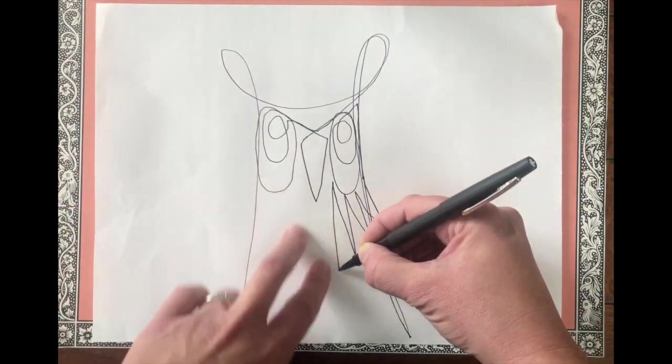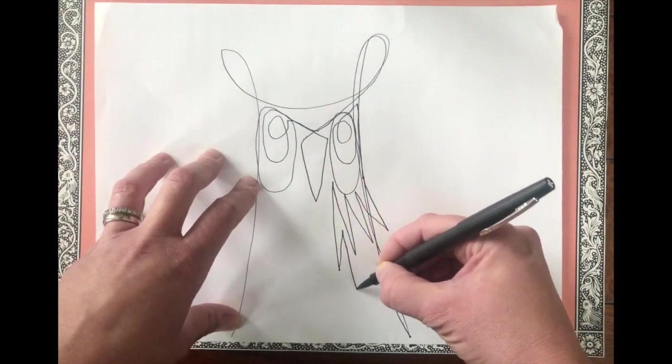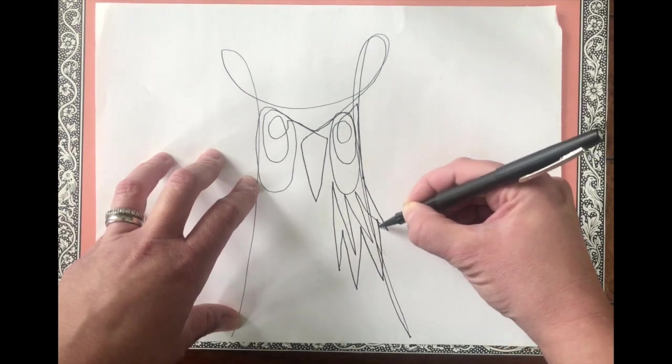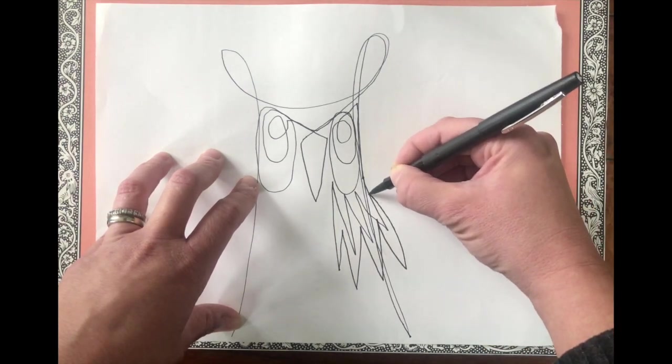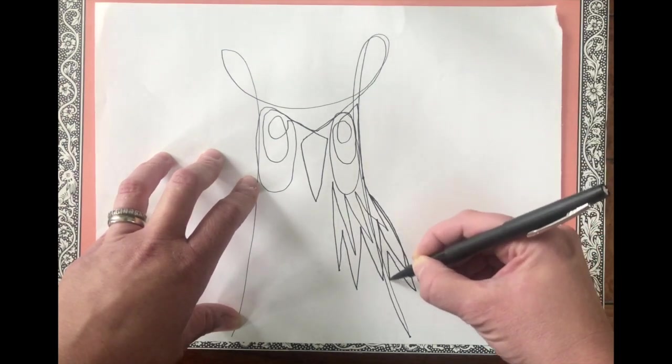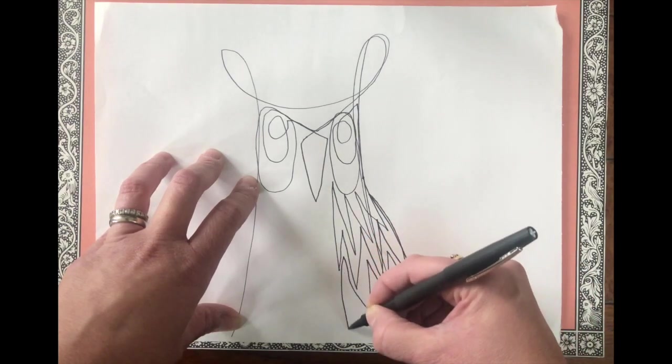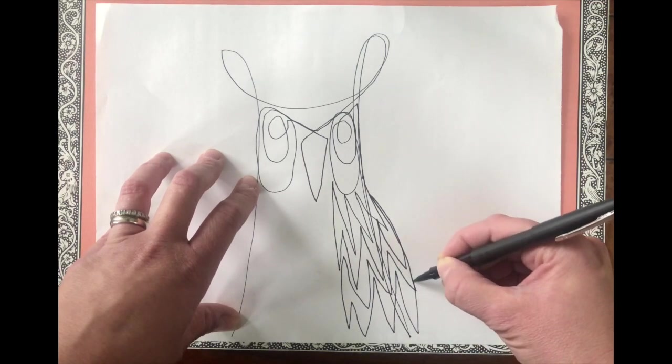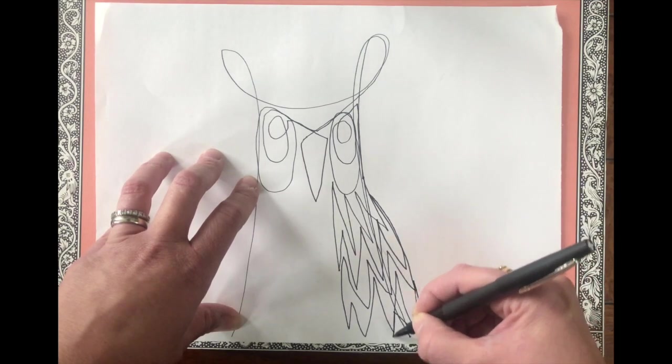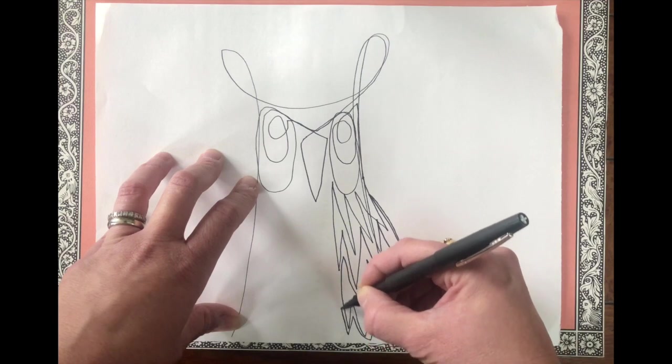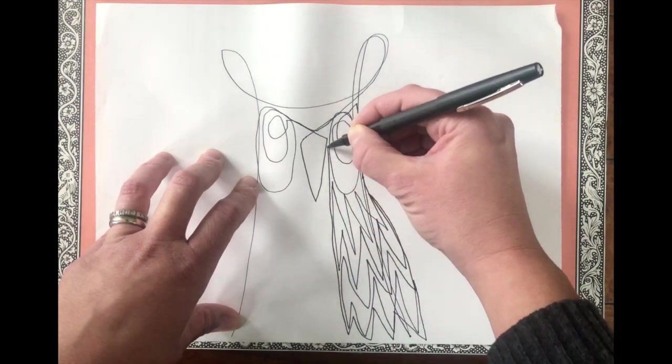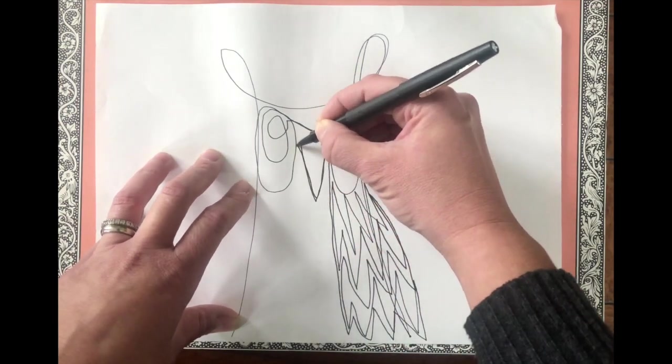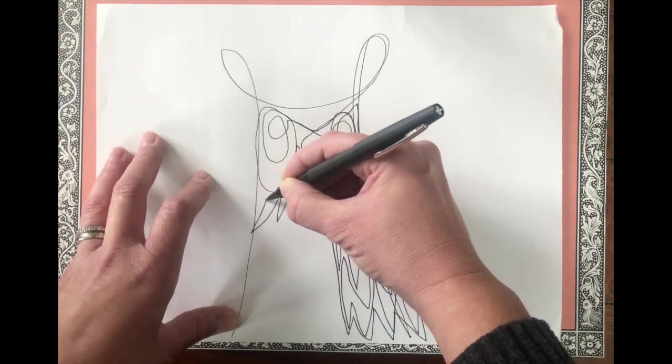Now leave this center part open because what we're creating right now is like the wings of the owl. So we want to make sure that we're keeping that middle part empty so we can create some other feathers in the center, like the feathers that would be on his belly. All right, we're going to go back over. We've got to find a way to come back to the other side. I'm going to go up, trace around his beak, around his eye, and then go again with my other feathers.